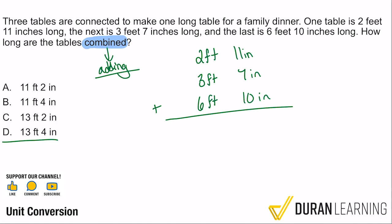So all we've got to do is just grab your feet. You have 2 feet, 3 feet, and 6 feet. That makes 11 feet. And now, what do your inches add up to? Well, what that will add up to is 11 plus 7 is 18, plus 10 is 28. So we have 11 feet, 28 inches.